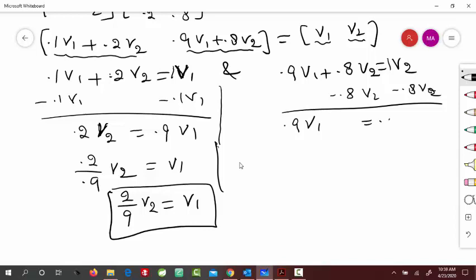So this would be 0.9 V1 equal to, think of coefficient 1, so 1 minus 0.8 is 0.2 V2. And if solved in terms of V1, it would be 0.2 by 0.9 V2 or 2/9 of V2.